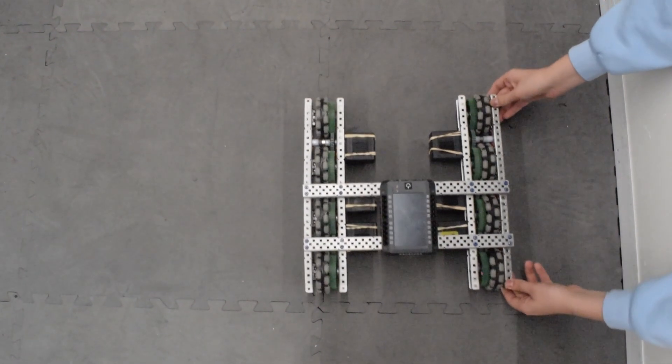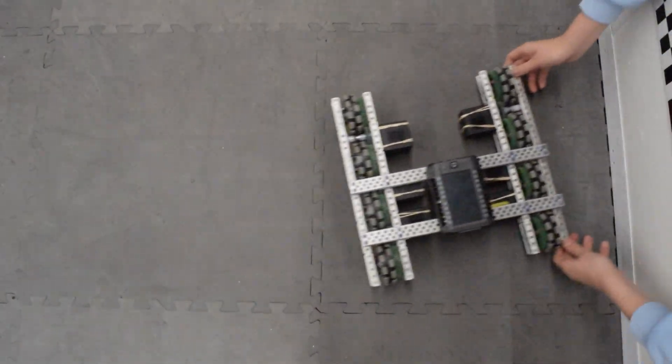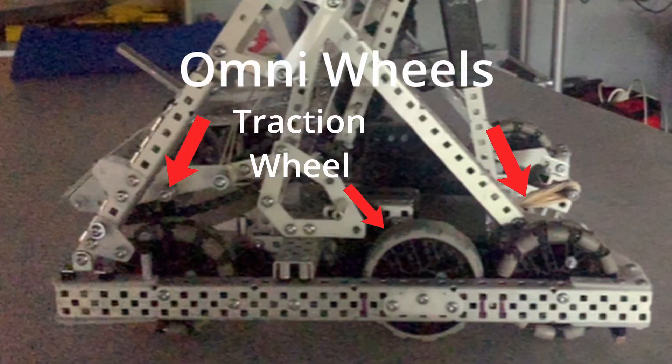However, other teams can easily push you from the side, causing some teams to use a hybrid design using both Omni and traction wheels.